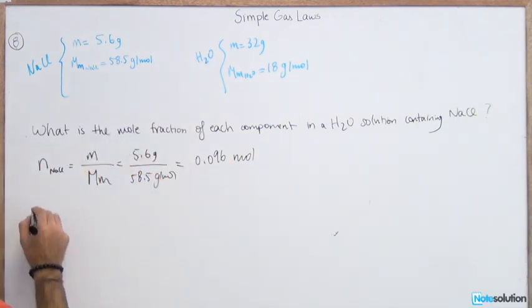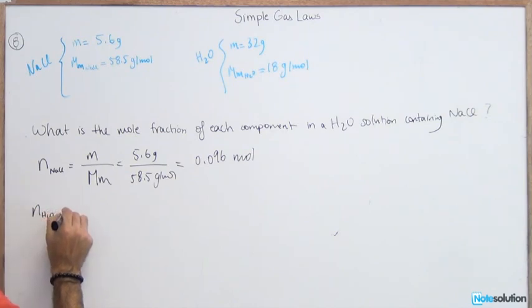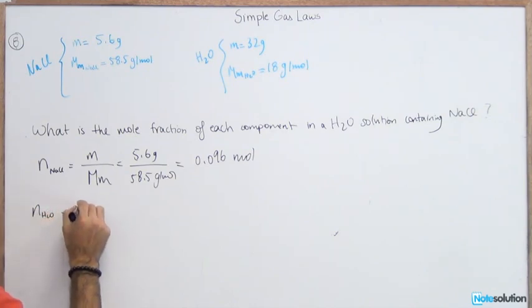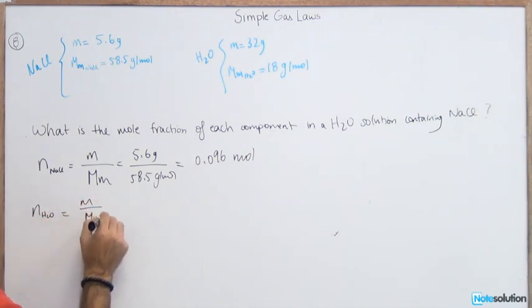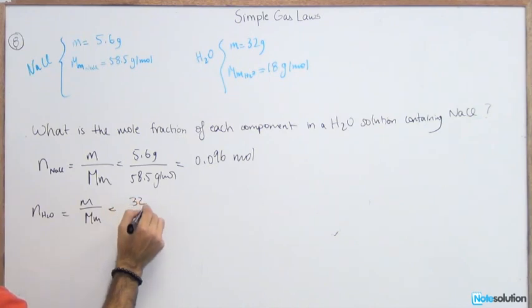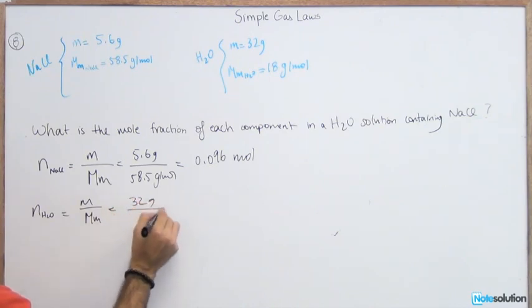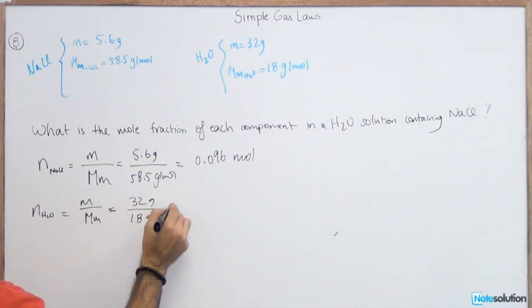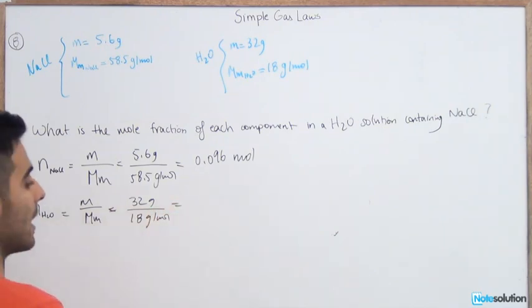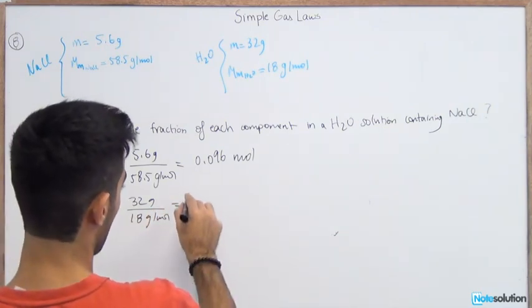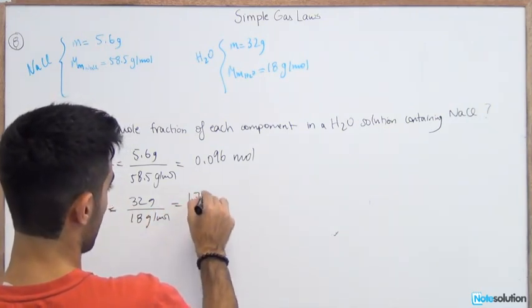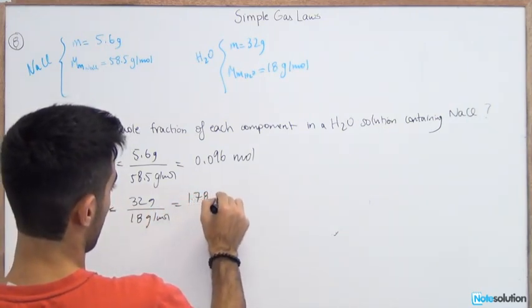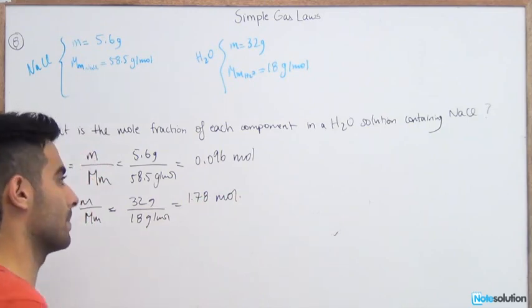The number of moles of water is again mass over molar mass: 32 grams over 18 grams per mole, which gives you 1.78 moles.